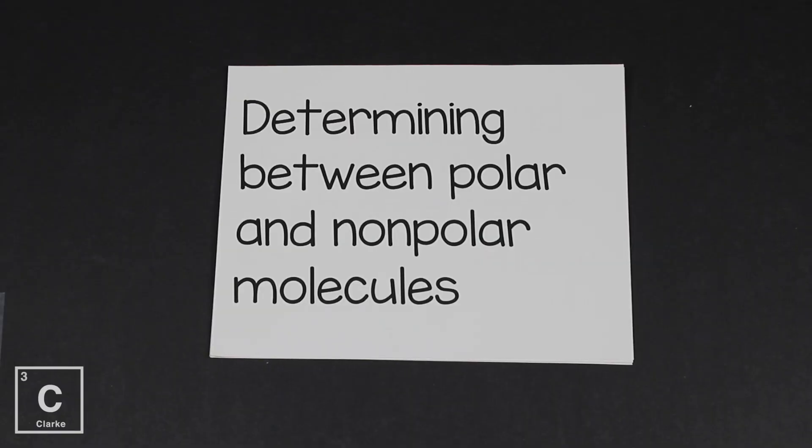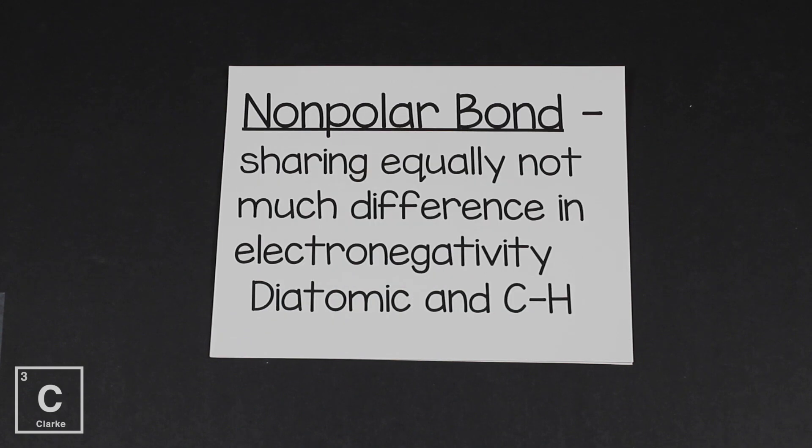So these words polar and nonpolar shouldn't be brand new words. We've talked about that in the past when we were talking about bonding. Covalent bonds, you can have polar covalent and nonpolar covalent. Remember a nonpolar bond is when we're sharing those electrons equally because there's barely any electronegativity difference. For VSEPR and for deciding if a whole molecule is polar or nonpolar, that's much different than just determining a bond. We can have a polar bond and not have a polar molecule, and that's what we're trying to decide here, whether the whole molecule is polar or not.